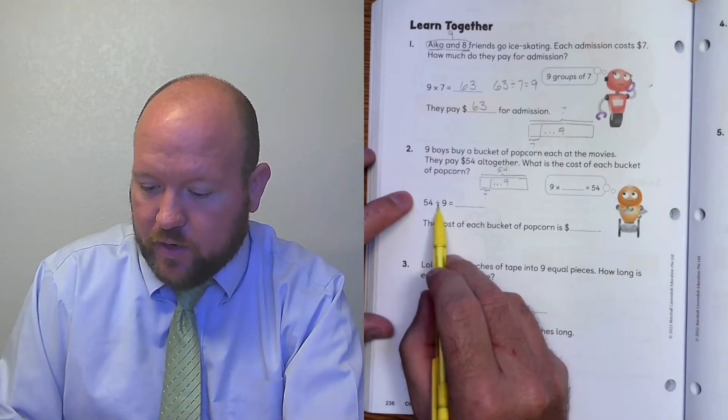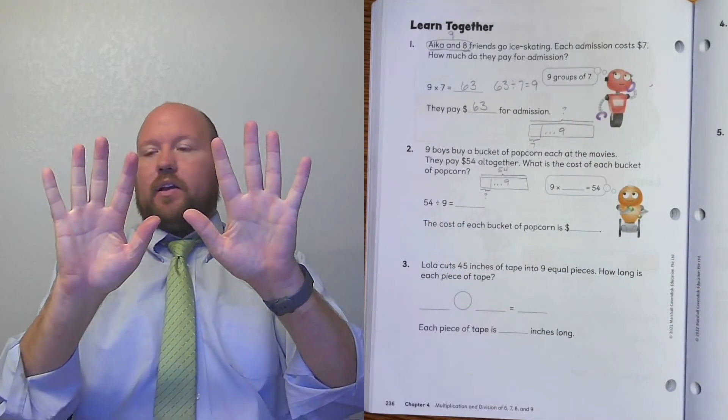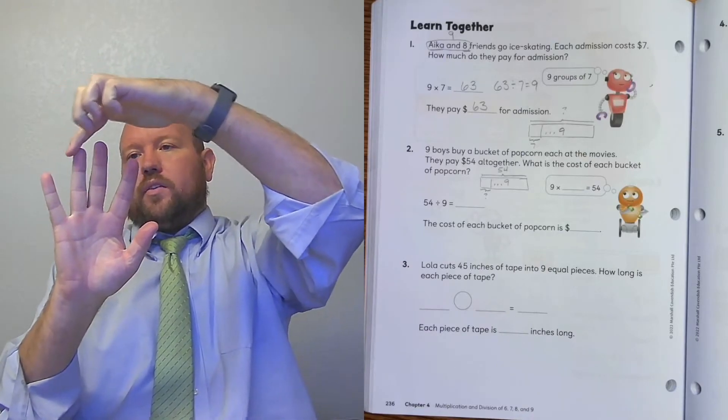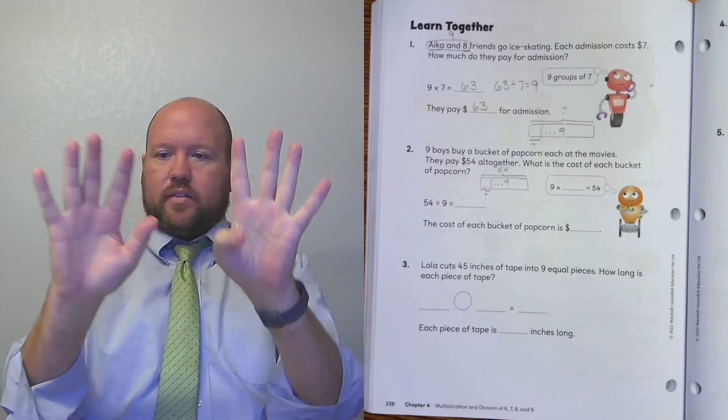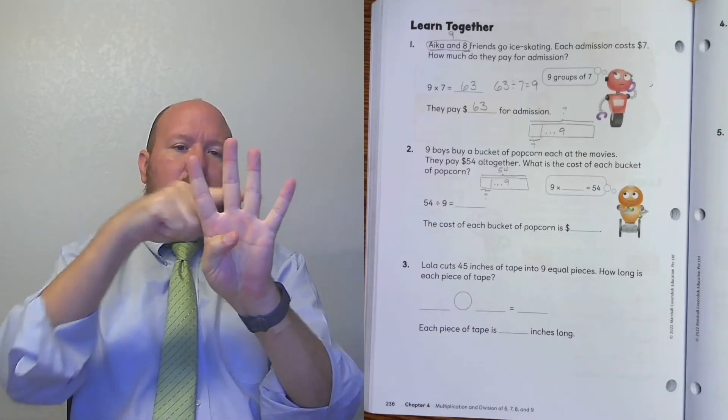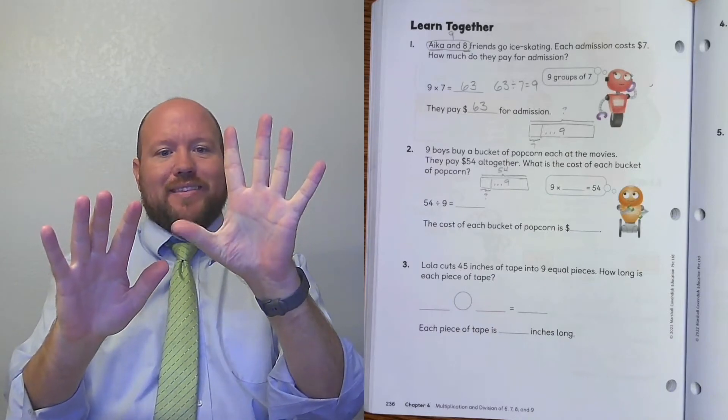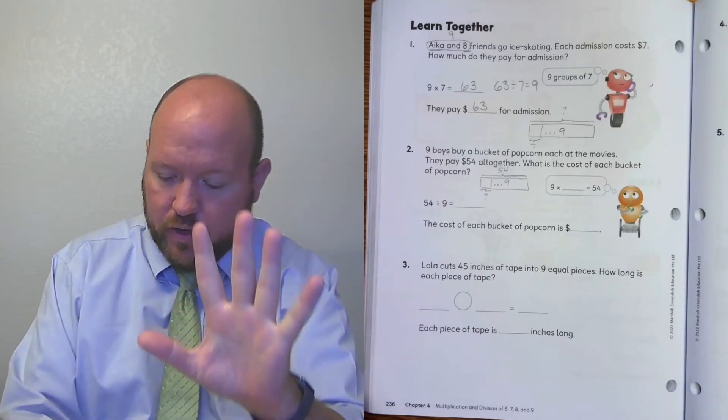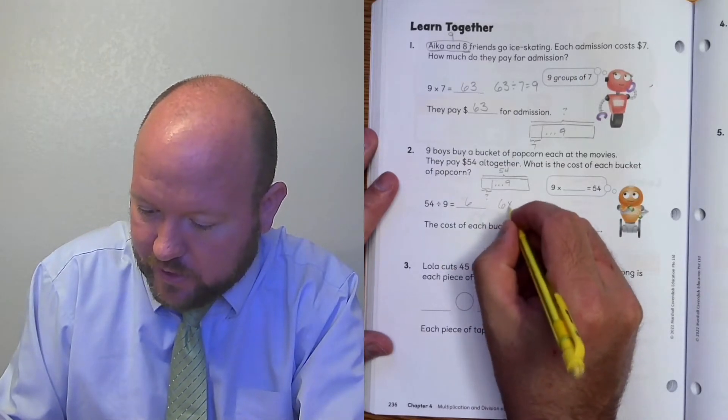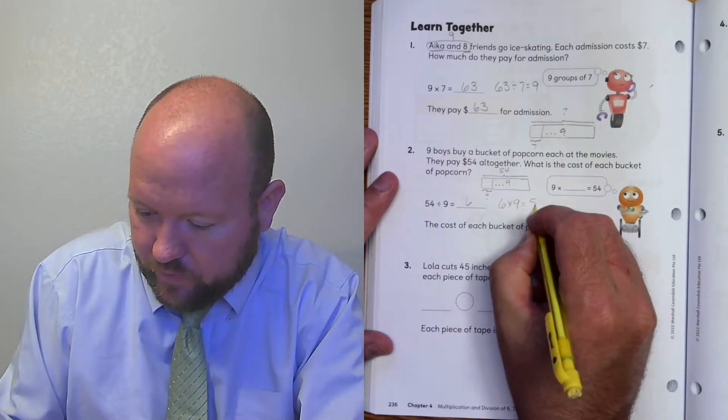So here we're going to divide. So I need 54. 1, 2, 3, 4, 5, 6. So now I have a 5 over here and a 4 over here. And I had to put down the 6th finger. So it equals 6. And that's true because 6 times 9 equals 54.